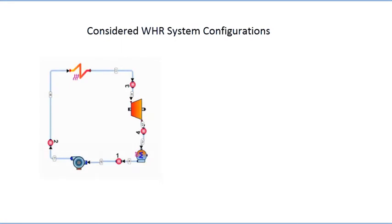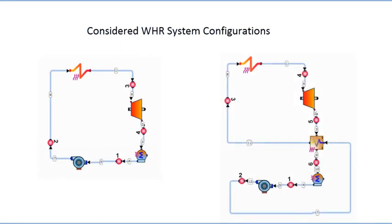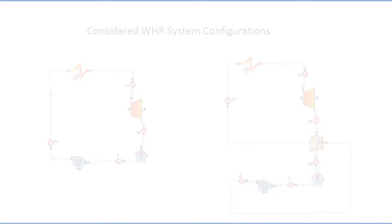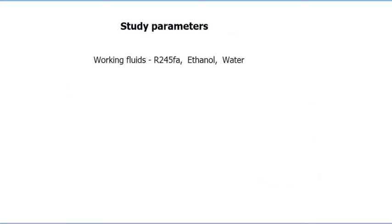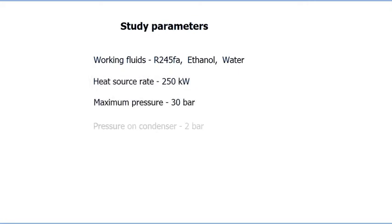Two configurations will be considered in the current study: a simple Rankine cycle and a Rankine cycle with recuperation. The goal is to determine the working range of operational parameters — pressure and temperature — for both configurations, using working fluids R245fa, ethanol, and water steam. The heat rate of the heat source is 250 kilowatts. Due to design constraints, maximum pressure is limited to 30 bar and pressure on the condenser inlet is 2 bar.